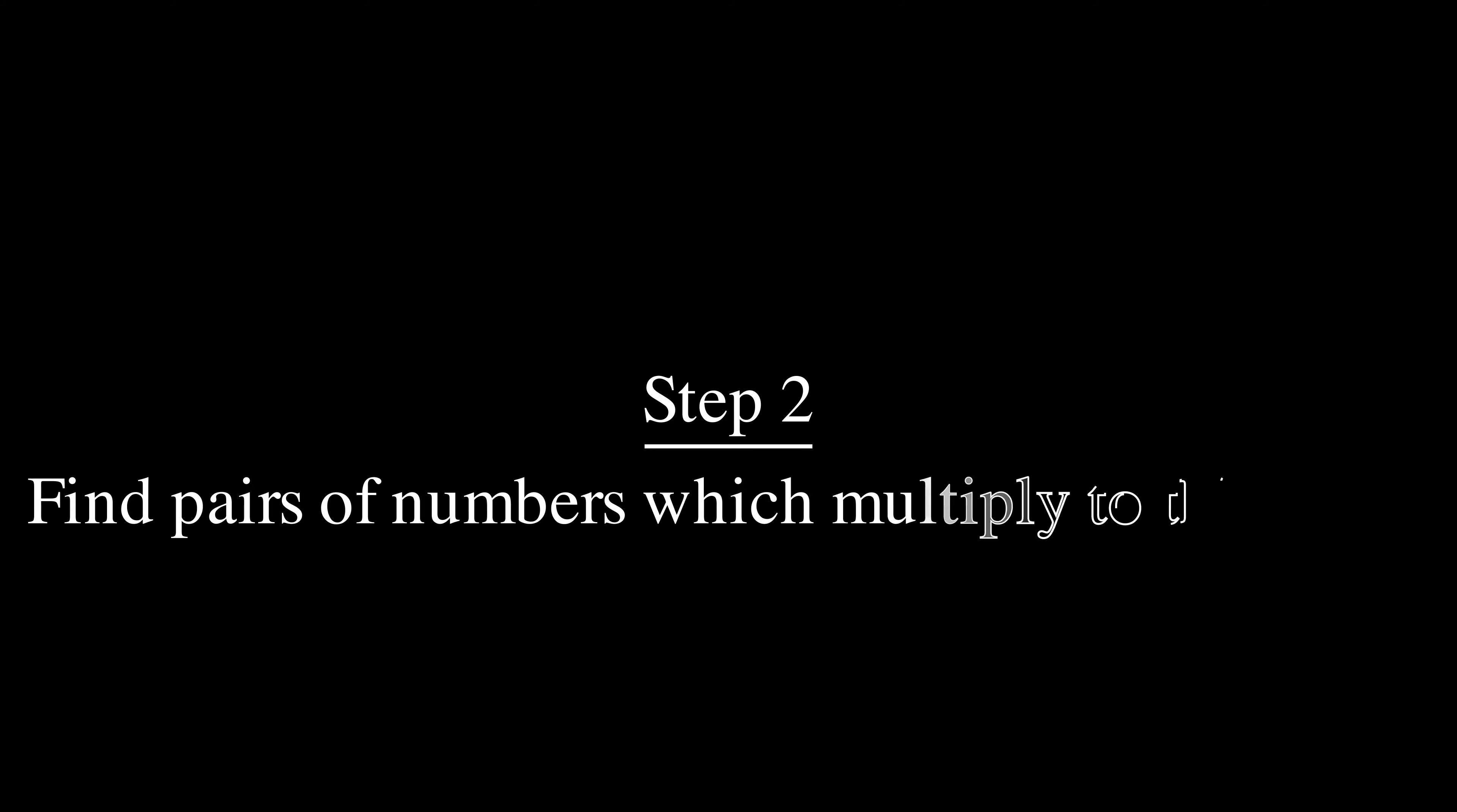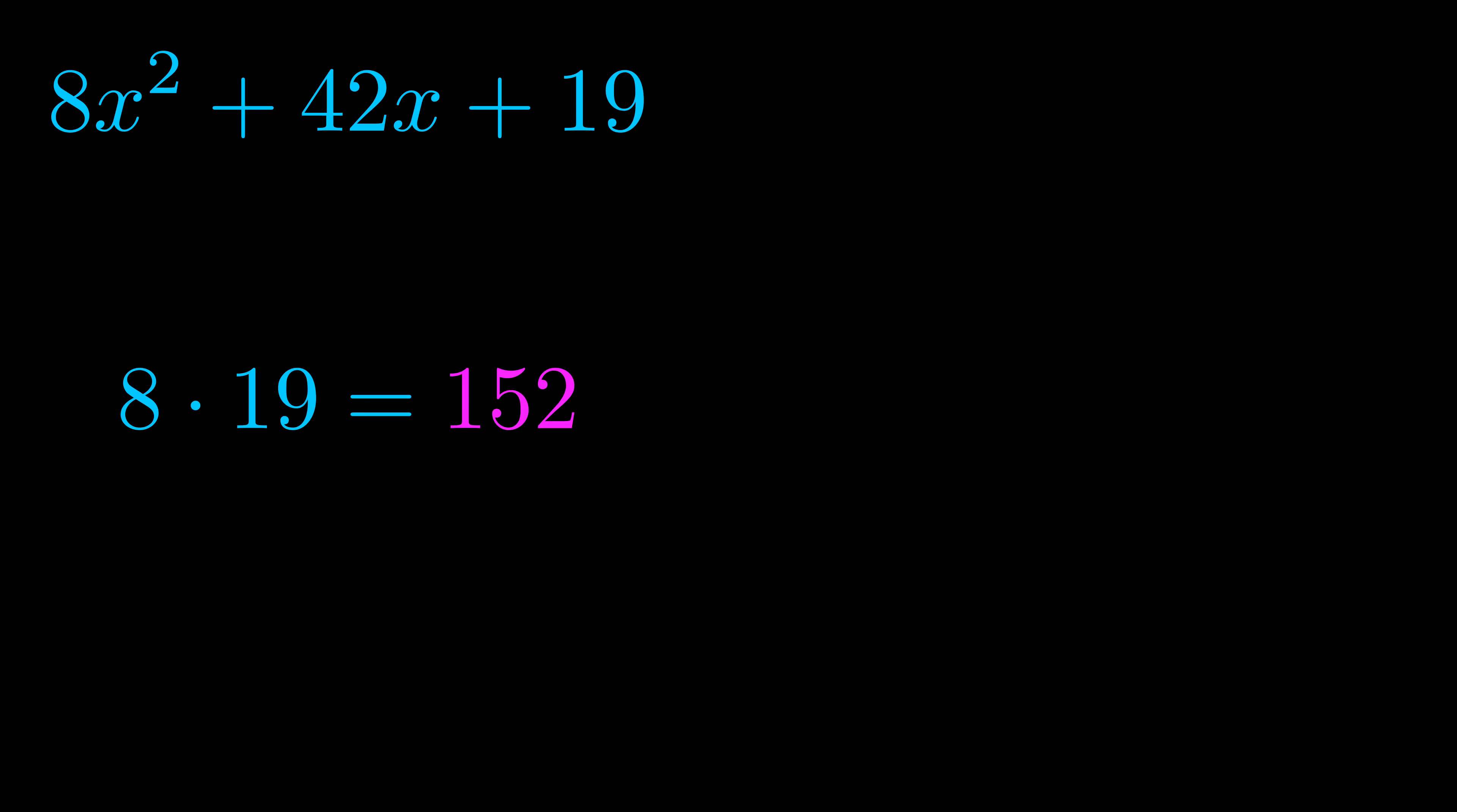Step two is to try to find all of the pairs which multiply to this number. Now it turns out you don't really need to find all of them but go ahead and write down as many numbers as you can that multiply to the magenta value for now. Pause the video and resume when you're ready to continue. Okay here's what I came up with.